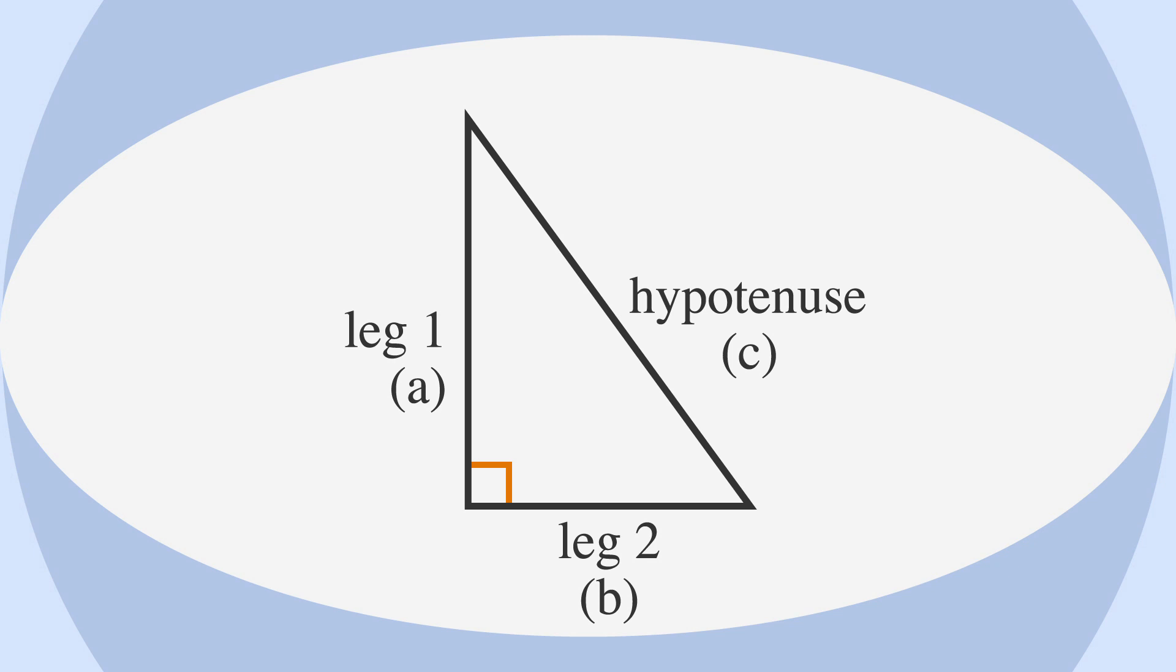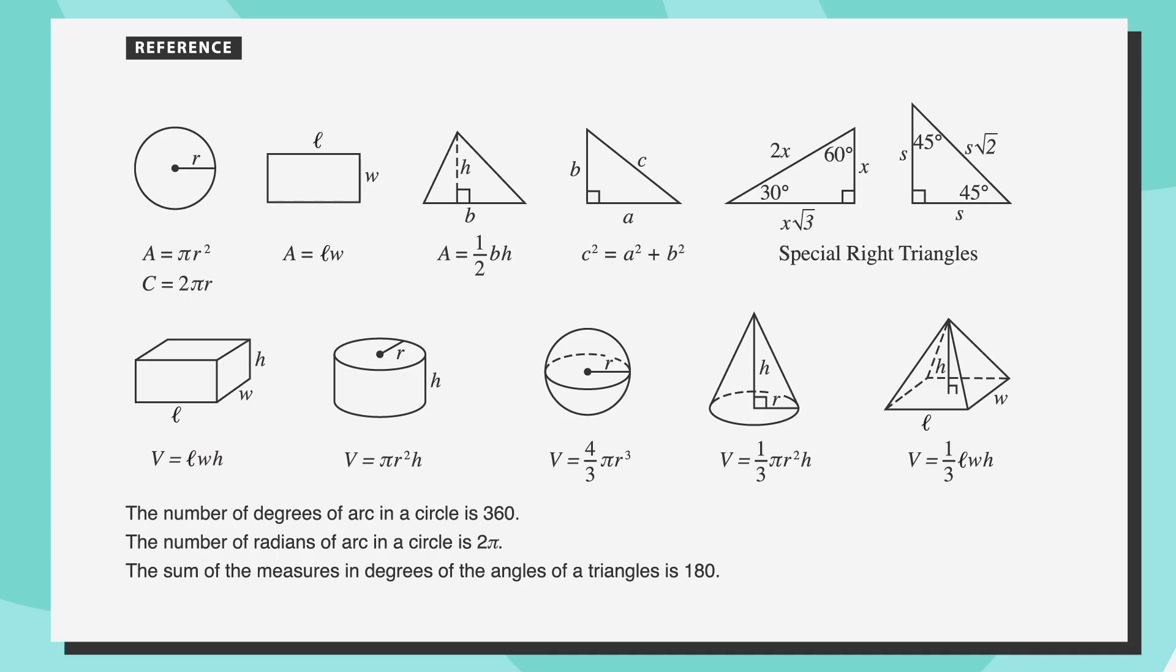One type of problem the SAT may ask you to solve is to find the missing side of a right triangle. To do that, you might remember that you need to use the Pythagorean theorem. It's given in the formula box at the beginning of each math section, but let's look at an example so you know how to use it.